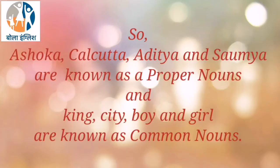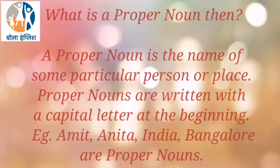So Ashoka, Calcutta, Aditya and Saumya are known as Proper Nouns. And king, city, boy and girl are known as Common Nouns. A Proper Noun is the name of some particular person or place. Proper nouns are written with a capital letter at the beginning. For example, Amit, Anita, India, Bangalore are Proper Nouns.